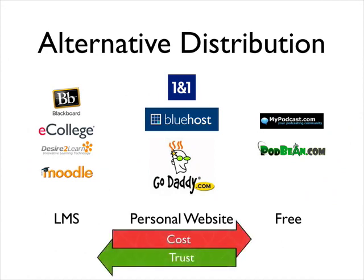Alternatives fall into three categories. On the left, there are learning management systems you pay for — Blackboard, eCollege, Desire2Learn, or Moodle. Alternatively, you can pay for personal websites; I've used 1-and-1, Bluehost, and GoDaddy. Or you can use free services like mypodcast.com or podbean.com. However, students tend to look down on free services and view paid services as more trustworthy — a determination you may need to make depending on your course.